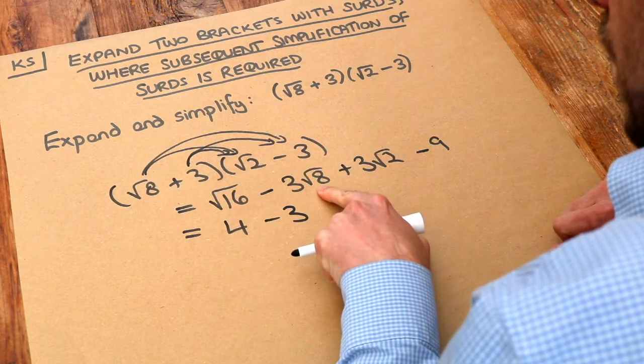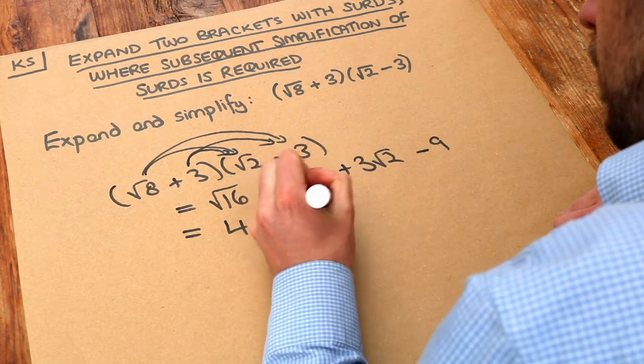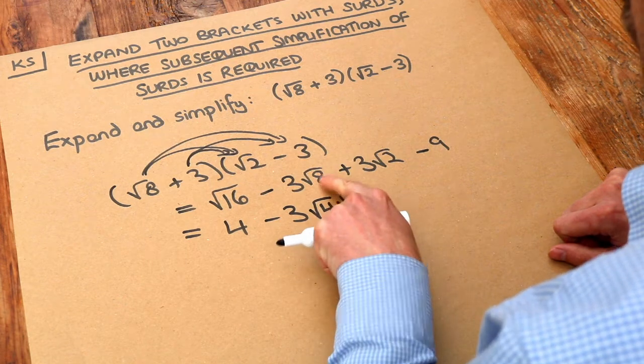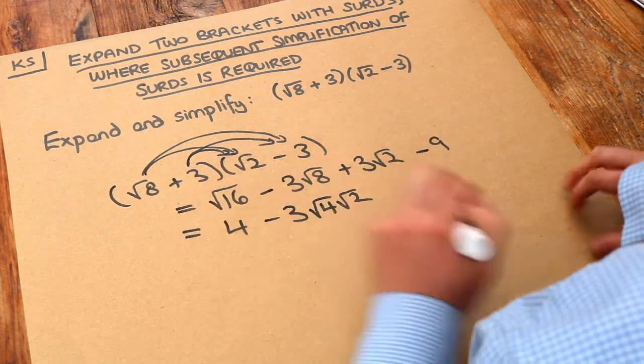So that means we write the root 8 as root 4 root 2. We put that square number first and then we think well 4 times what is 8? Well it's 2. So we saw that in a previous video.